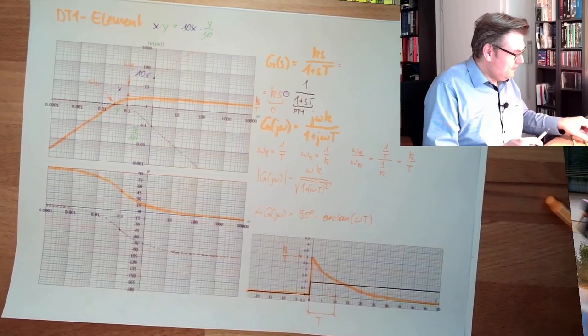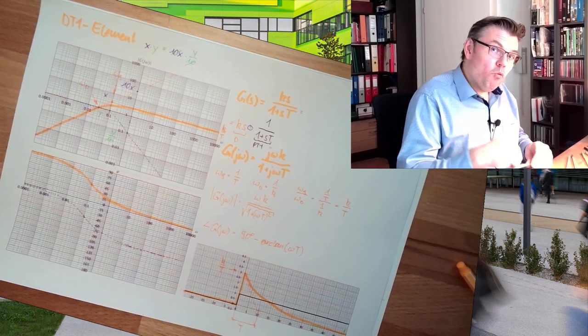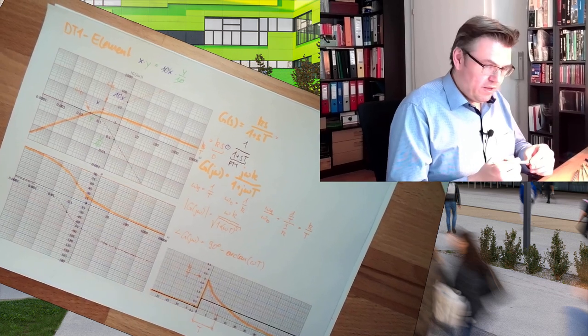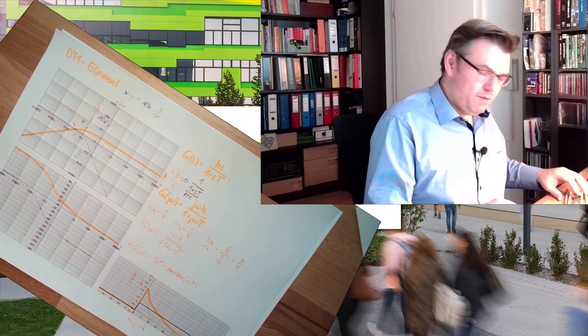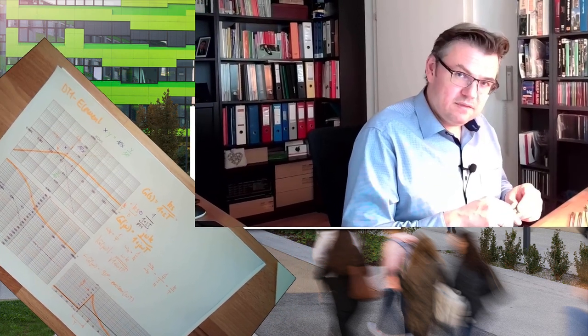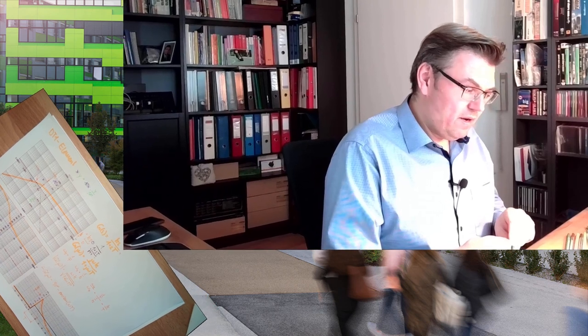This is the DT1 element, which is much closer to a really existing system than a pure D element. The DT1 element is also called a 'really existing derivation element,' although it is still idealized. Next time we will talk about another combined element — the PD element — which combines a proportional element and a derivation element, but this time in parallel rather than in series.